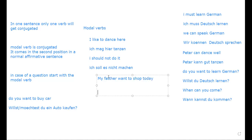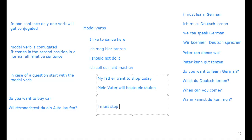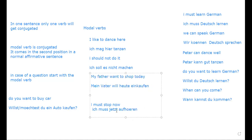Now, in the case of separable verbs (trennbare Verben) with a modal, the prefix does NOT separate. For example, 'einkaufen' — to shop. 'My father wants to shop': 'Mein Vater will einkaufen.' The verb 'einkaufen' stays together as an infinitive at the end. Another example: 'I must stop now' — 'aufhören' is the separable verb; it stays as 'aufhören' at the end without separation.